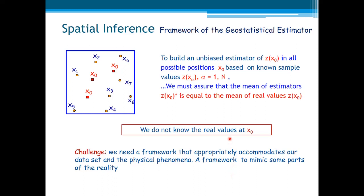Now let us see the framework of the geostatistical estimator. To build the unbiasedness estimator of z at all possible positions x based on known sample values, we must ensure that the mean of the estimators is equal to the mean of the real values at the same locations. Now it comes a problem: we do not know the real values. So this is the challenge — we need a framework that appropriately accommodates our dataset and the physical phenomena, a framework to mimic some parts of the reality.